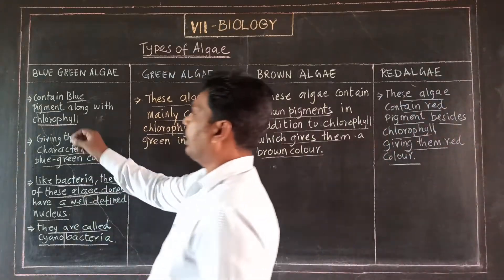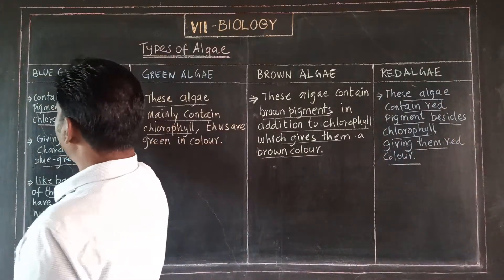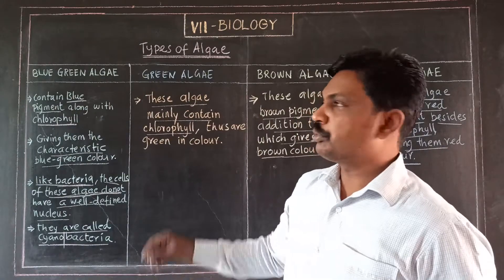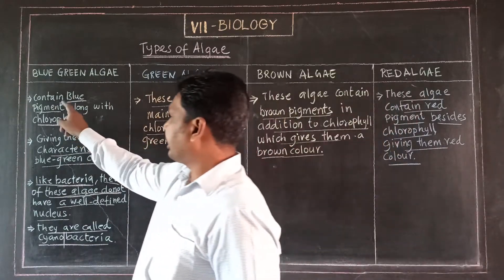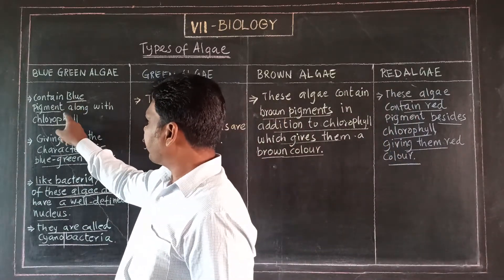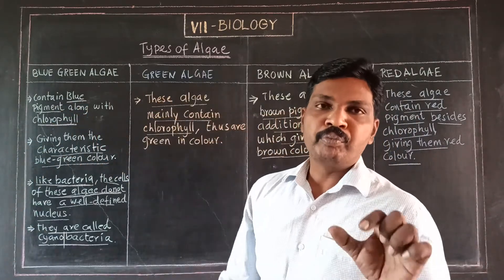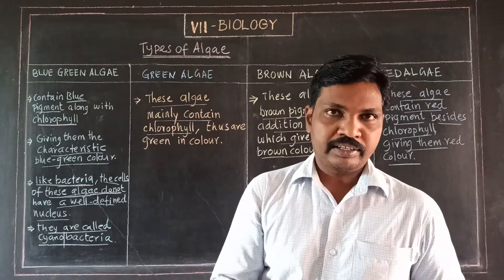First, blue-green algae. The blue-green algae contains blue pigment along with chlorophyll. Chlorophyll itself is not a blue color.